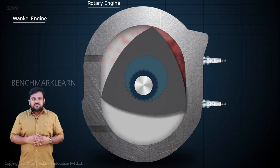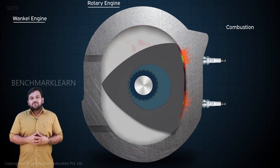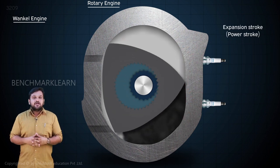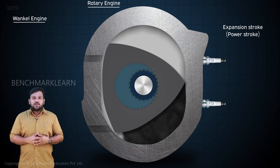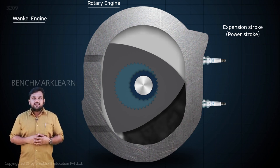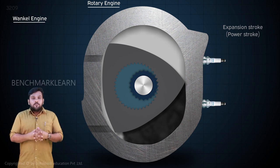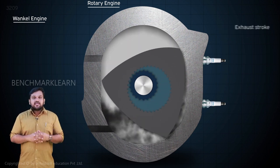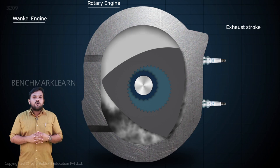During this time, a spark is introduced and this results in the expansion of the air-fuel mixture due to combustion. This in turn pushes the rotor, providing the necessary energy for its rotation. The subsequent rotation pushes the exhaust gases outward through the exhaust port.